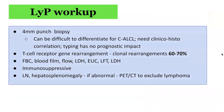In terms of workup, a 4mm punch biopsy should be performed. It can be difficult to differentiate lymphomatoid papulosis from cutaneous anaplastic large cell lymphoma, requiring clinical and histological correlation. Other workup tests include T-cell receptor gene rearrangement studies, blood testing including FBC, blood film, flow cytometry, LDH, electrolytes, and liver function testing, immunosuppression screening, lymph node examination, hepatosplenomegaly examination, as well as imaging such as PET scan or CT scan to exclude lymphomas.